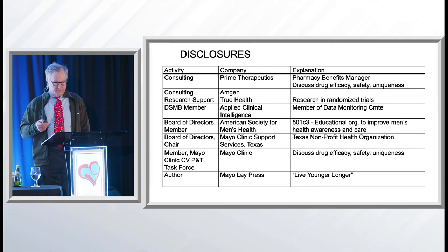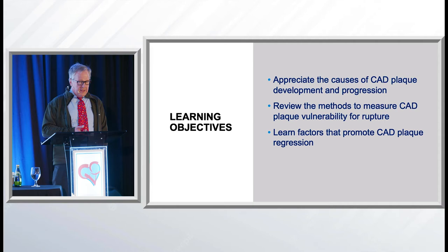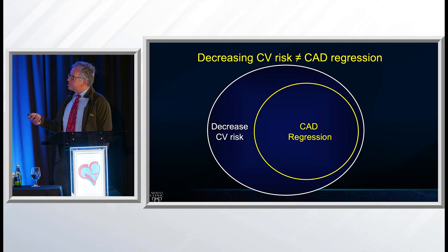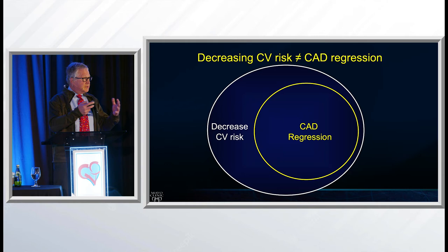What will we talk about? We'll appreciate the causes of coronary artery disease, plaque development, and progression. Review the methods to measure and assess it for plaque vulnerability — meaning the plaque's likely to rupture — and then learn the factors that promote plaque regression. To be clear, if you have coronary cardiovascular risk, reducing it doesn't necessarily mean you will induce plaque regression, but plaque regression is part of decreasing cardiovascular risk. It's not just about the lipids or the cholesterol.